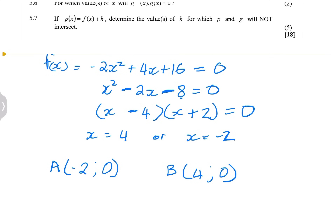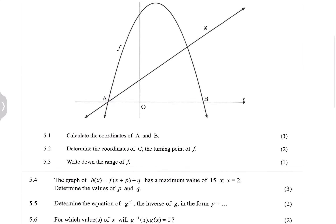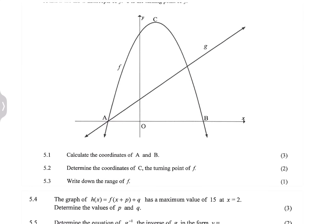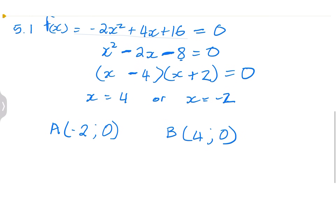Now let's go into the next one. They say determine the coordinates of C, the turning point of F. When we're looking for the turning point, there are two ways of doing that. First, we can take minus B over 2A, or we can take the derivative, or alternatively, we can take the midpoint of the two X intercepts.